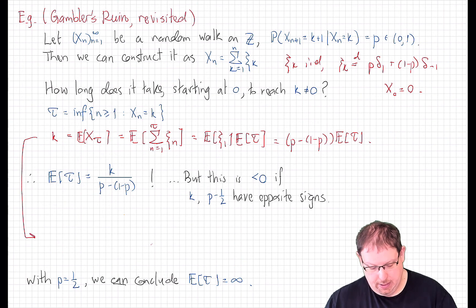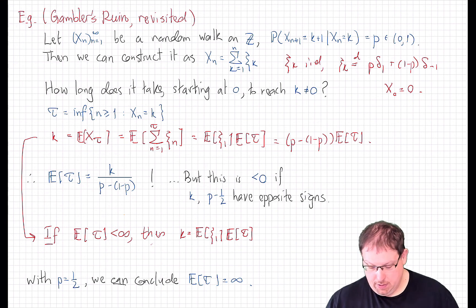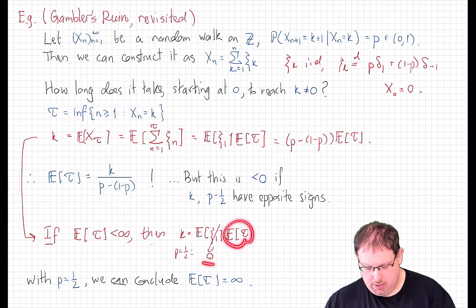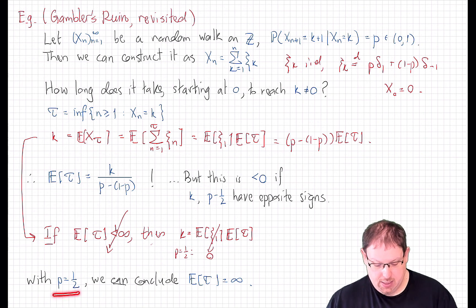Here, we can deduce the following. If the expected value of tau was finite, then this calculation would show us that for any k not equal to 0, k is equal to the expected value of c1 times that finite expected value, tau. That would follow by Wald. But in the case where p is equal to 1 half, this is 0. And we can't have a finite number here times 0 equals some nonzero number k. So that is a contradiction here. And we can conclude, at least from Wald's identity quickly, that for the symmetric random walk, the expected time to reach any state other than 0, starting at 0, must be infinite.